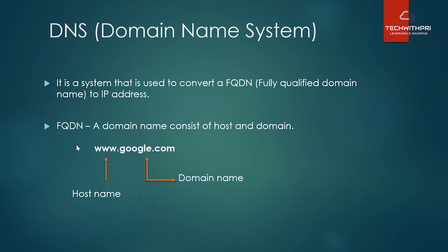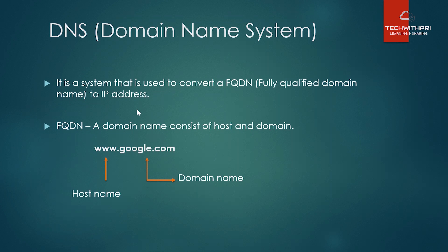So DNS converts a fully qualified domain name to an IP address. As we know, IP address is the most important thing in networking because all devices — computers, printers, laptops — communicate using IP addresses only. When you type google.com, the computer does not understand what google.com is; it only understands the IP address.